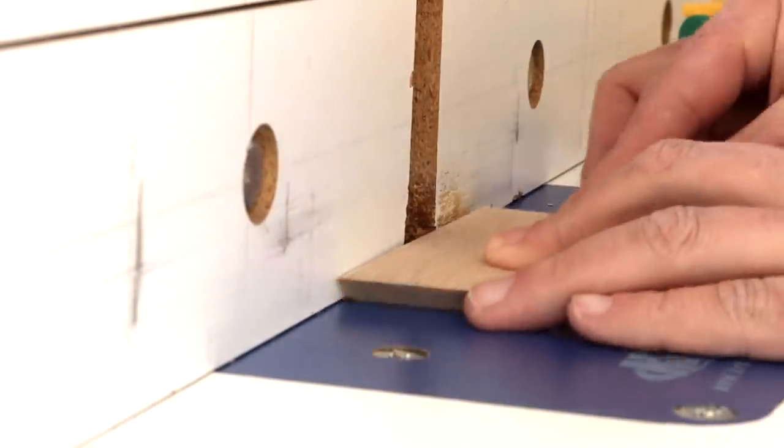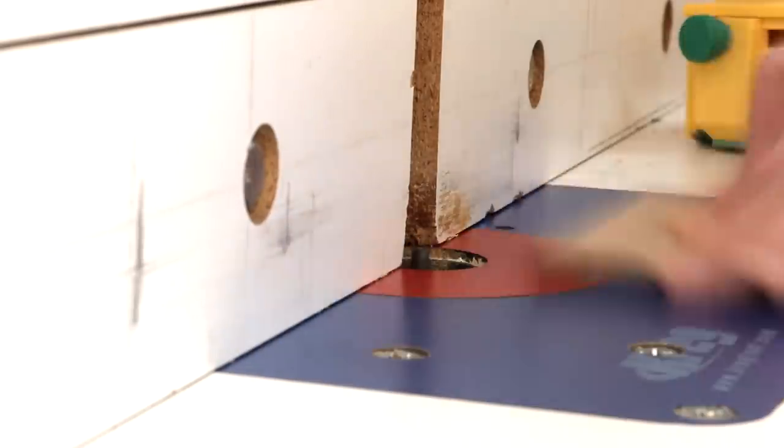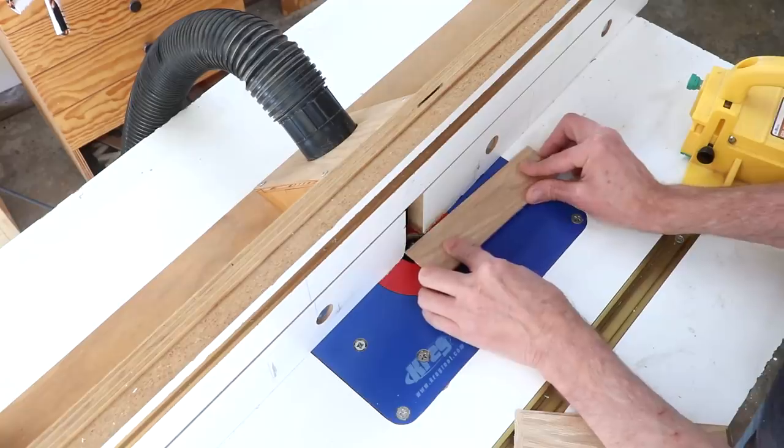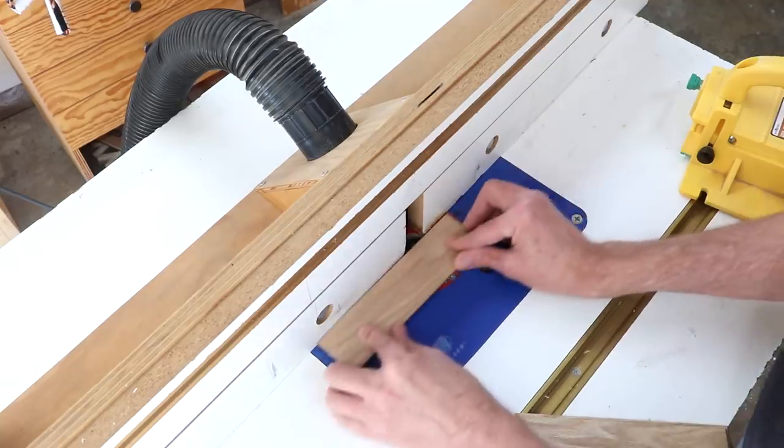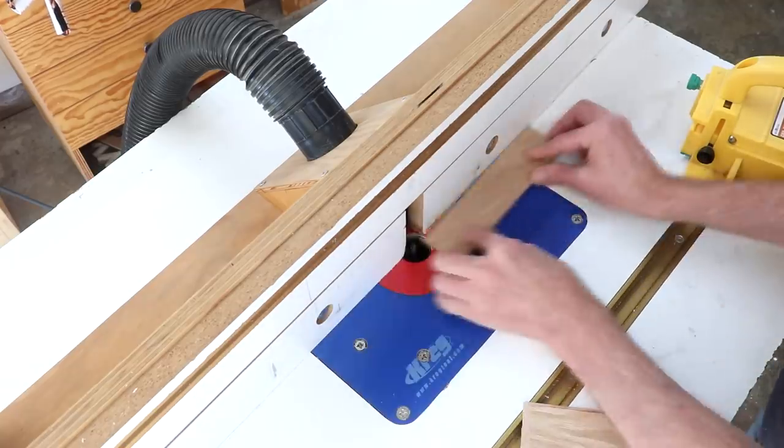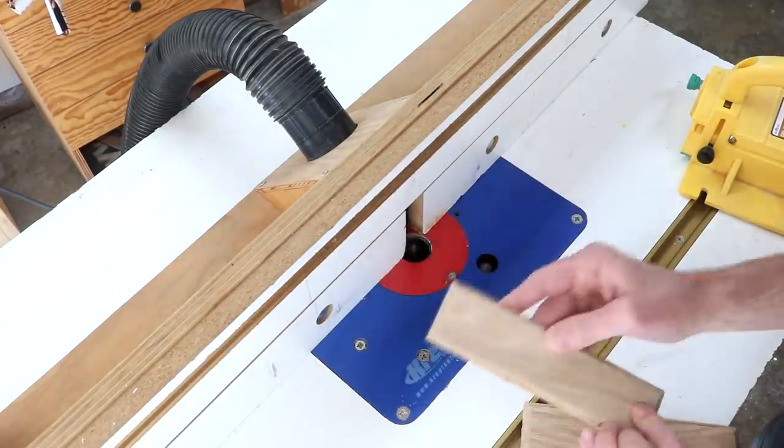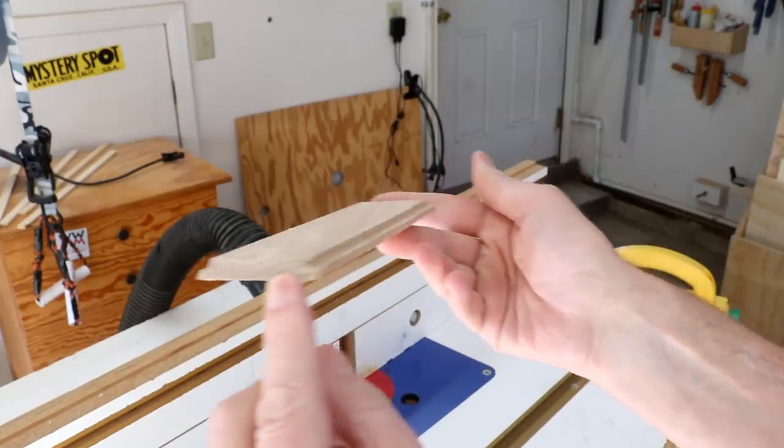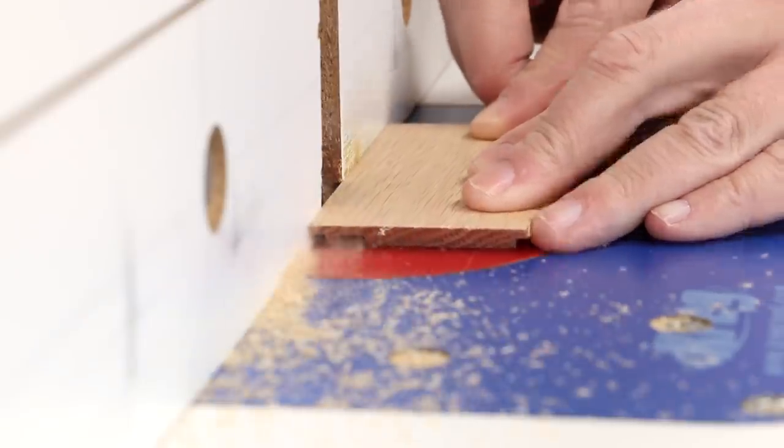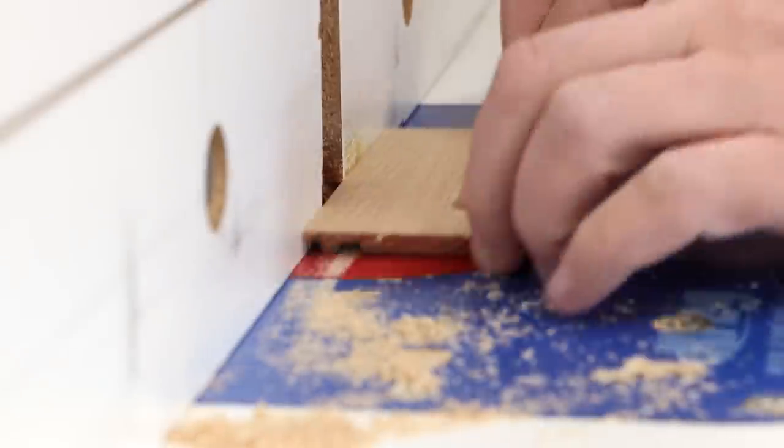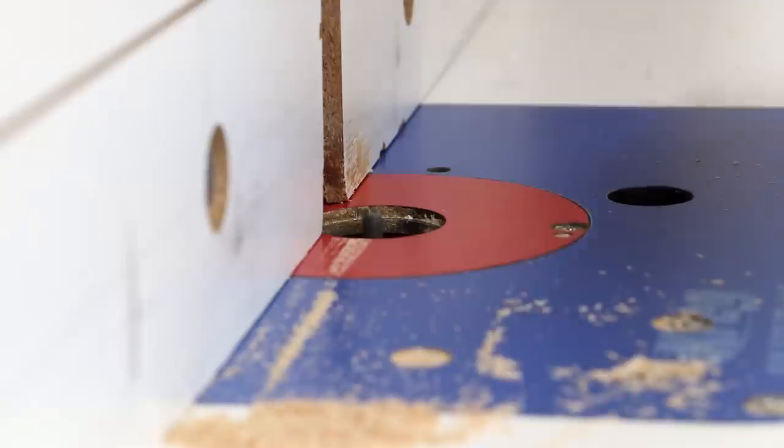I'm cutting a real shallow shoulder along the edge of each of these strips. With my fence moved back a little bit, I can cut a groove on the inside of each of these box pieces.